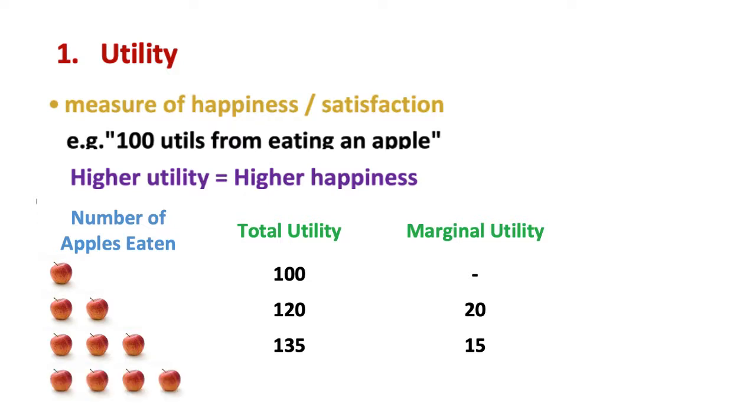What happens when you eat the fourth apple? Well, you could be getting sick of apples, literally. Still, maybe these are small apples and you love apples so that the total utility still increases, but by an even lesser amount. Notice how the marginal utility is getting smaller and smaller as you eat more apples.